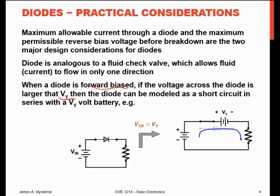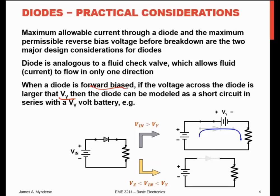The current does flow in the forward biased case. If the voltage is reverse biased and we haven't gone beyond breakdown voltage, we essentially just have an open circuit there. The voltage across the diode equals VS, and VR equals zero because there's no current flowing.